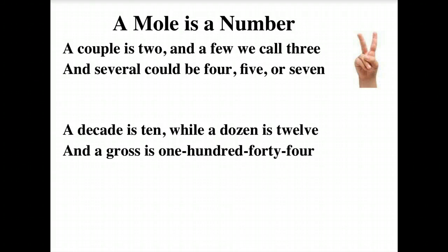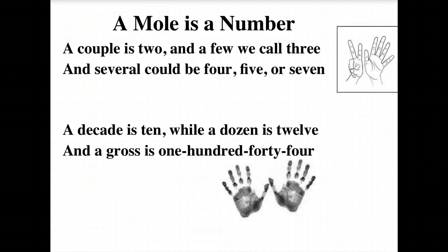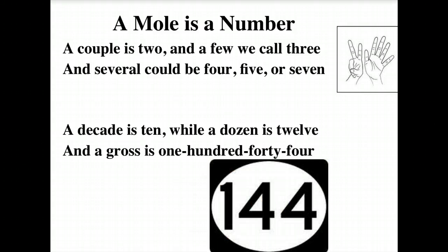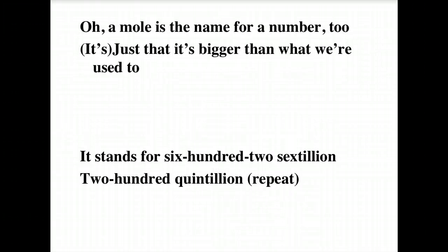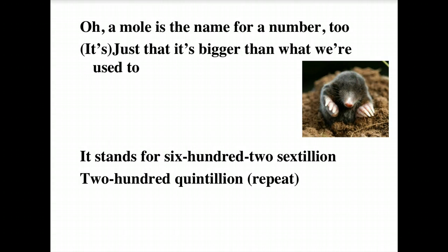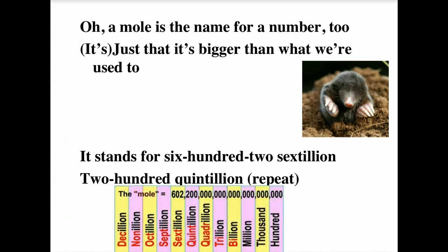A couple is two, and a few we call three, and several could be four, five, or seven. A decade is ten, while a dozen is twelve, and a gross as 144. It stands for six hundred to sextillion, two hundred quintillion.